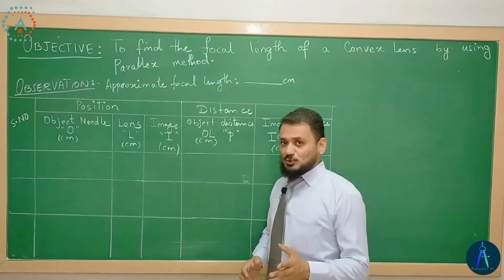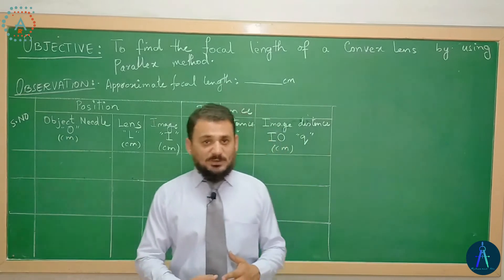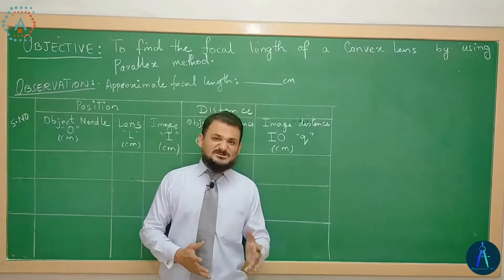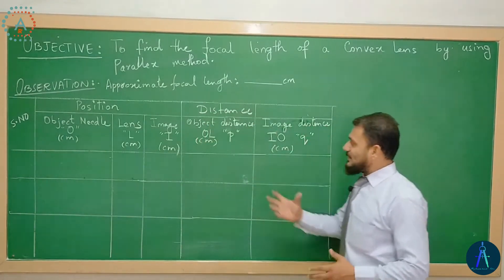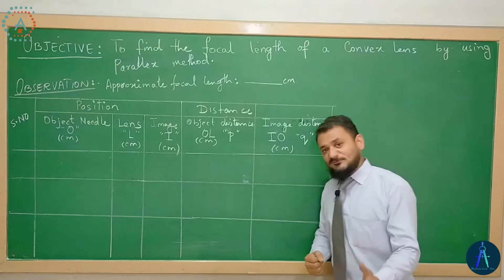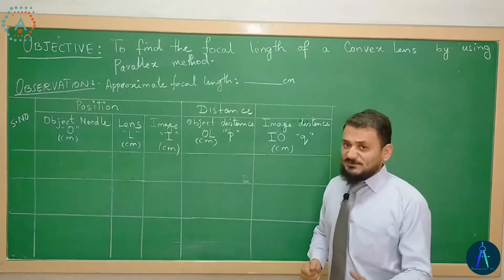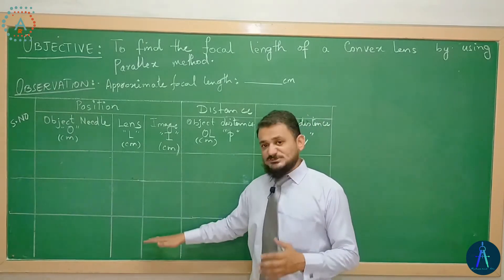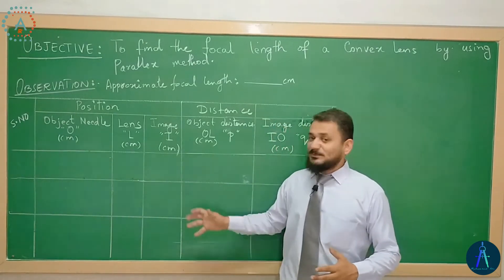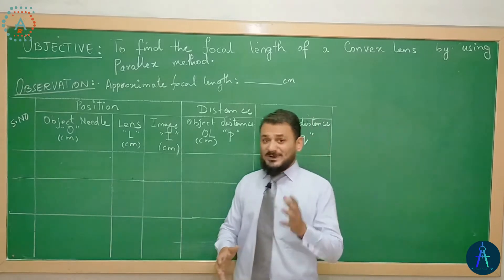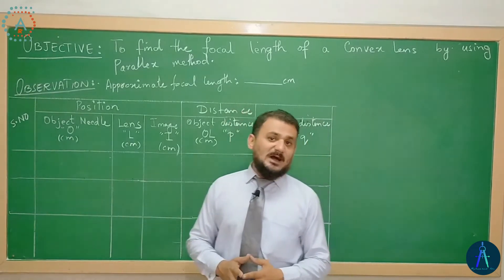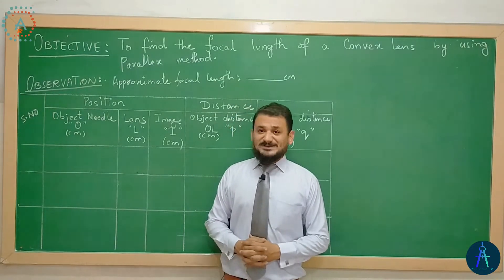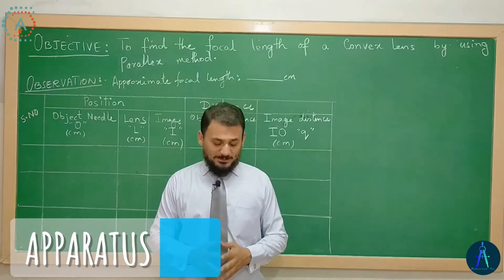جب ہم اپنے observation table کو دیکھیں تو یہاں ہمارے پاس ایک lens موجود ہوگا اور دو pins موجود ہوں گی — ایک pin ہماری object pin کہلائے گی جبکہ دوسری pin ہماری image pin کہلائے گی۔ ہم total 3 performances perform کریں گے اور انہی تین performances سے اس lens کی focal length معلوم کریں گے اور finally تینوں focal lengths کا average معلوم کریں گے۔